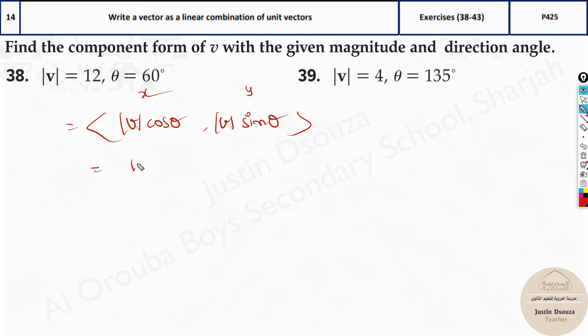Now all you need to do is substitute 12 cosine of 60 degrees, and the y value will be the same thing, 12, but the direction changes to sine of 60 degrees.